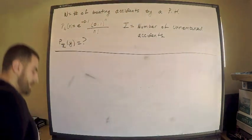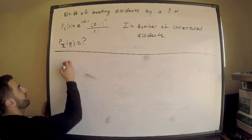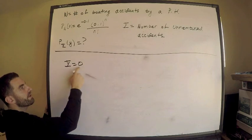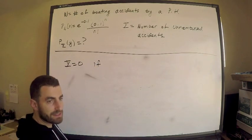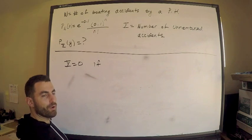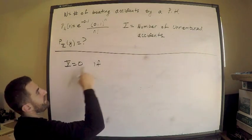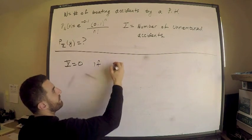When would the number of unreimbursed accidents be zero? When is Y equal to zero? The number of unreimbursed accidents is zero if, well, the insurance kicks in for only the first accident. But if there are zero accidents, then of course you're not going to have any unreimbursed accidents either, right? So think about it for a second.